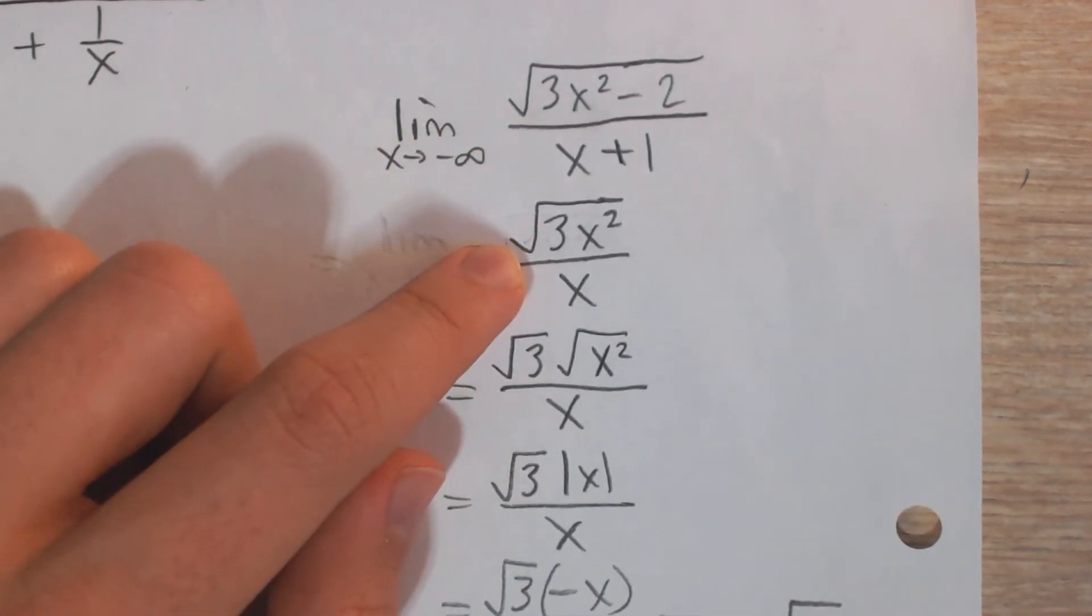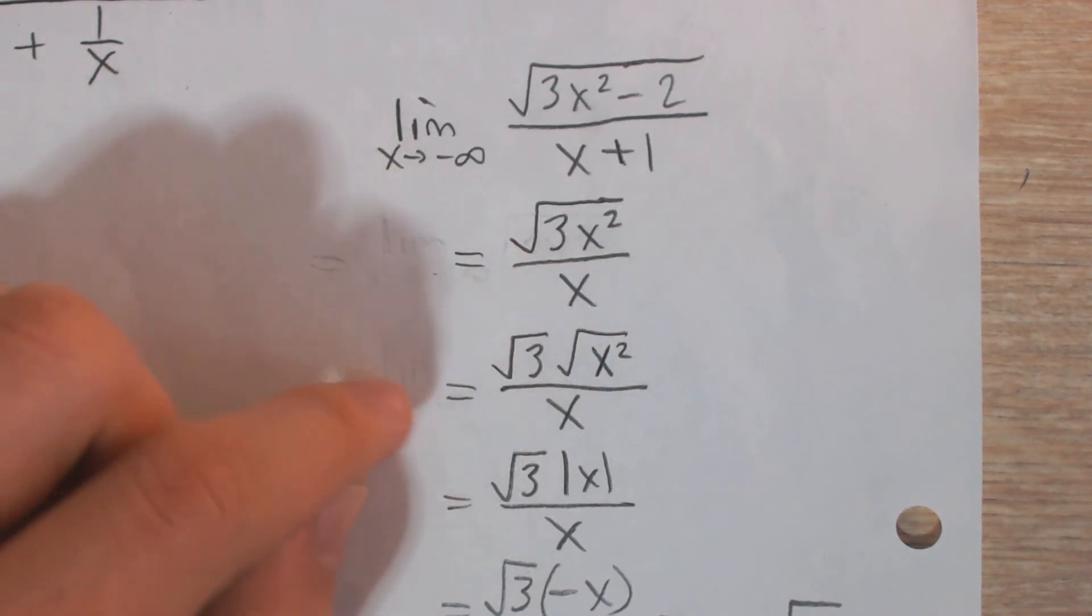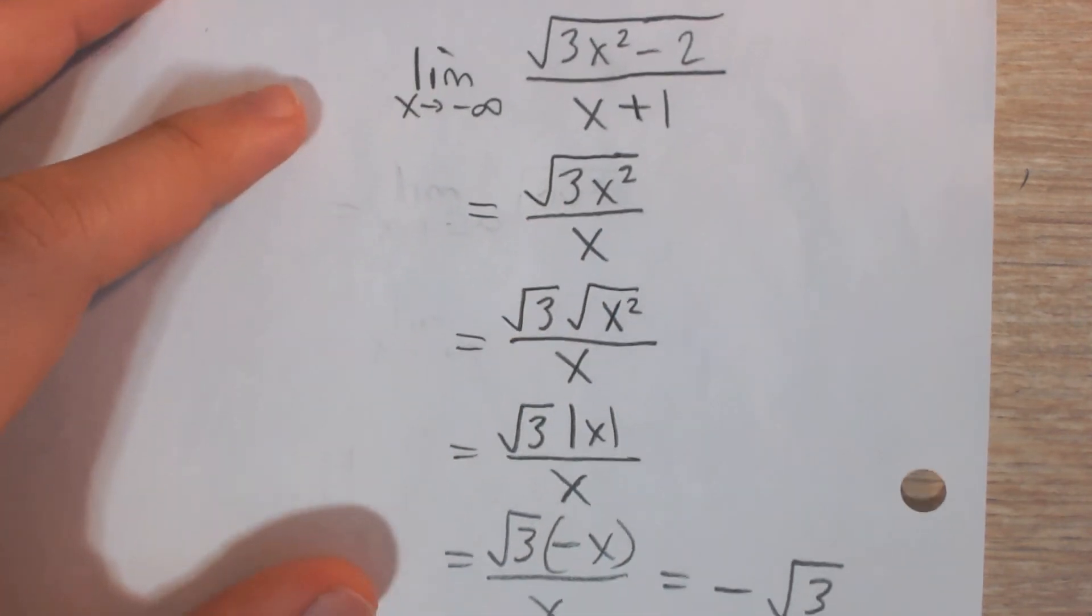And so when we have the square root of a product here, square root of 3 times square root of x squared, we can break those up.